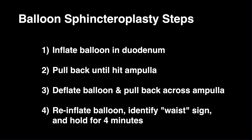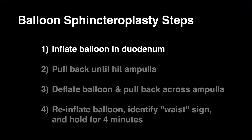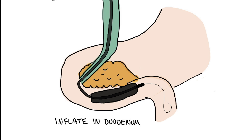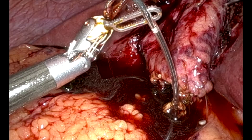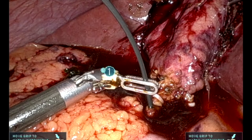There are 4 steps. First, insert the balloon over the wire into the duodenum and inflate the balloon to manufacturing guidelines of atmospheres for the diameter effect. Here you can see the balloon being pushed over the wire into the duodenum, which is watched simultaneously on fluoroscopy.